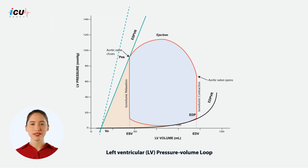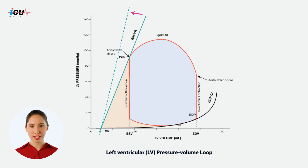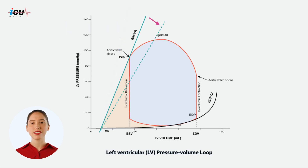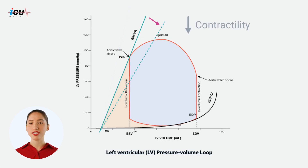An increase in the EEs slope relative to the control state indicates a positive inotropic response, or an increase in contractility, whereas a decrease in slope reflects a negative inotropic response, or a decrease in contractility.